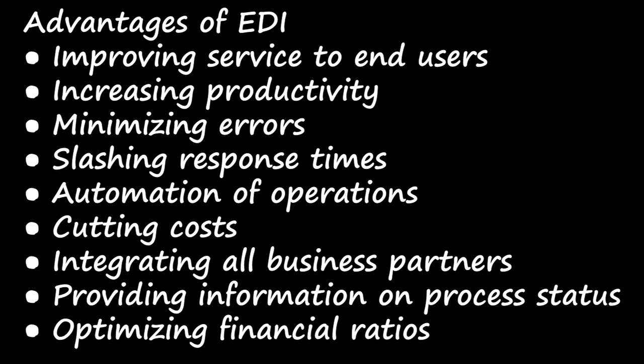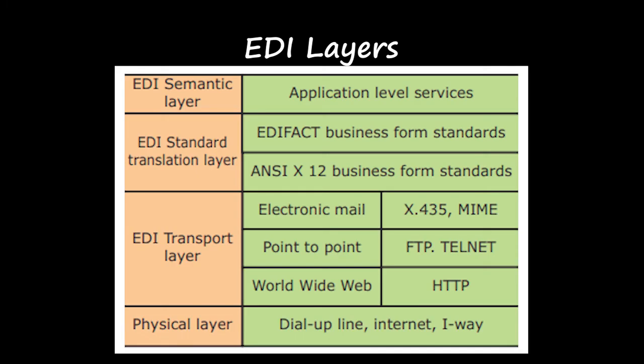Next, we are going to see the layers in EDI. The electronic data interchange architecture specifies four different layers: the semantic layer, the standard translation layer, the transport layer, and the physical layer.